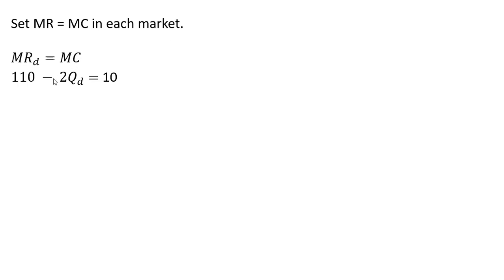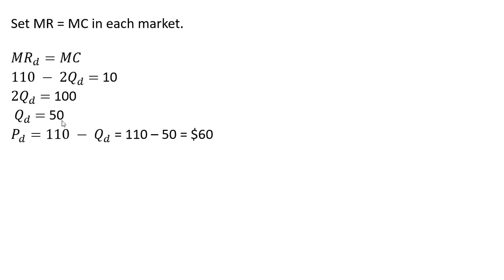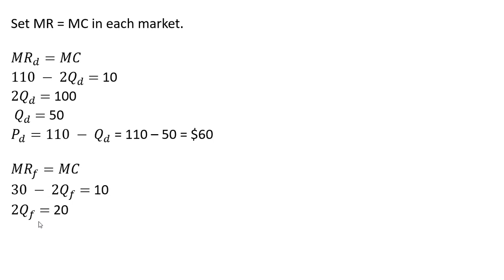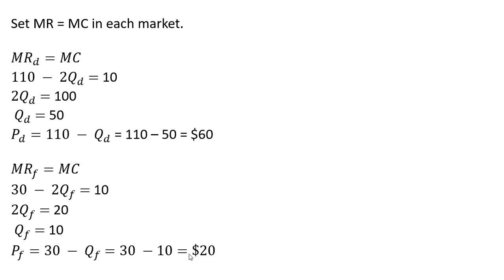The next step is to maximize profit in each market. With third-degree price discrimination, we set marginal revenue equal to marginal cost in each market segment. In the domestic market: 110 minus 2Q equals 10, so Q equals 50 units. Plugging 50 into the inverse demand, the price is $60. In the foreign market, setting marginal revenue equal to marginal cost, we get Q equals 10 units at a price of $20 each.